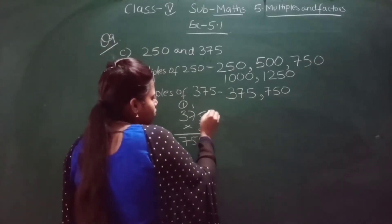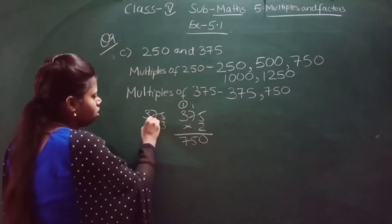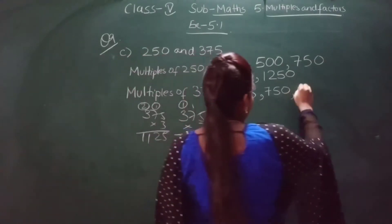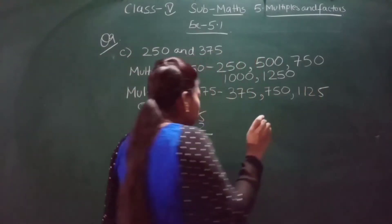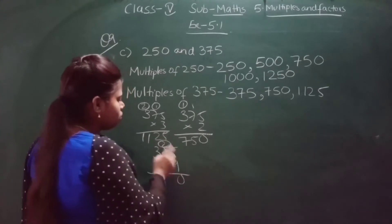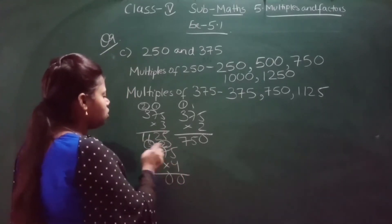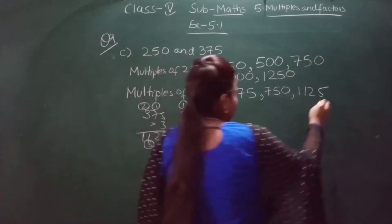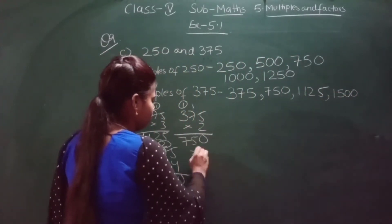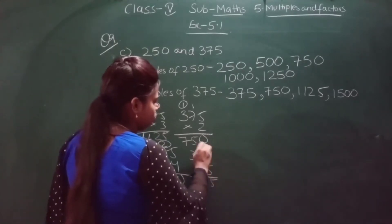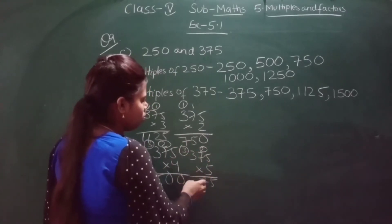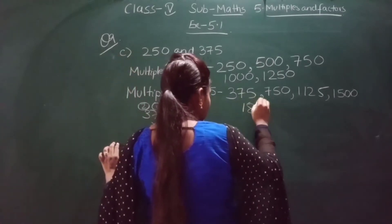Then we multiply by 3: 3×5 is 15, carry 1; 3×7 is 21 plus 1 is 22, carry 2; 3×3 is 9 plus 2 is 11 — so 1125. Then multiply by 4: 4×5 is 20, carry 2; 4×7 is 28 plus 2 is 30, carry 3; 4×3 is 12 plus 3 is 15 — so 1500. Then multiply by 5: 5×5 is 25, carry 2; 5×7 is 35 plus 2 is 37, carry 3; 5×3 is 15 plus 3 is 18 — so the 5th multiple is 1875.